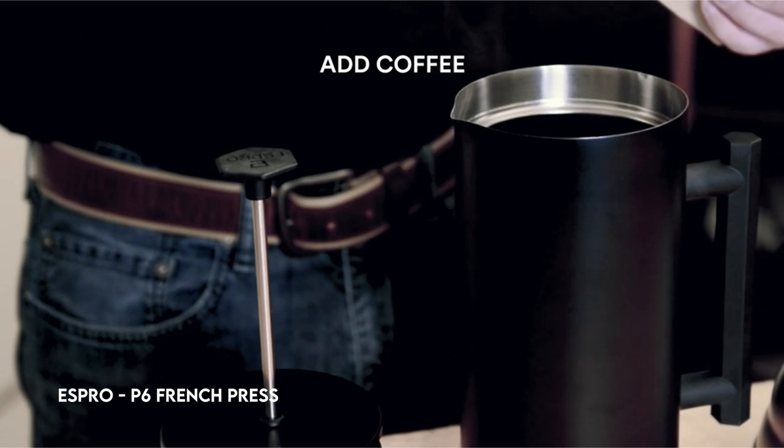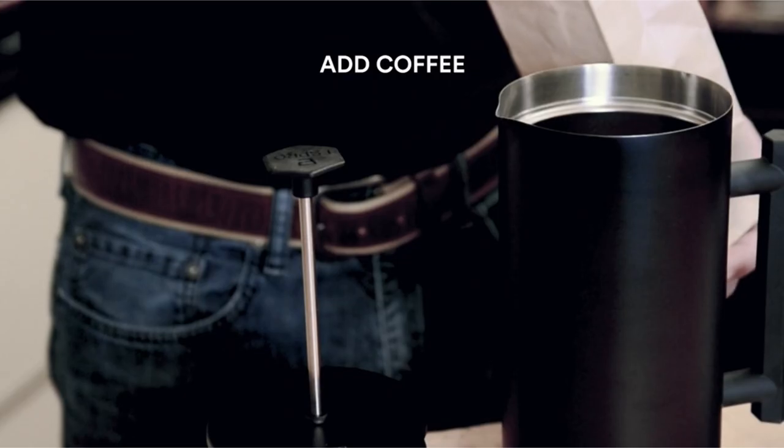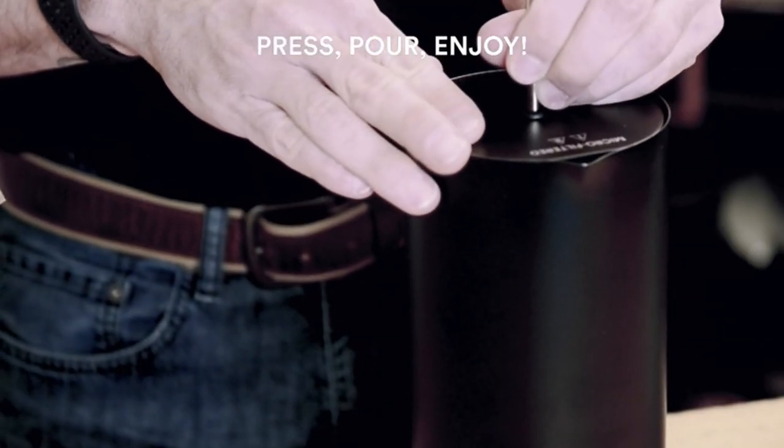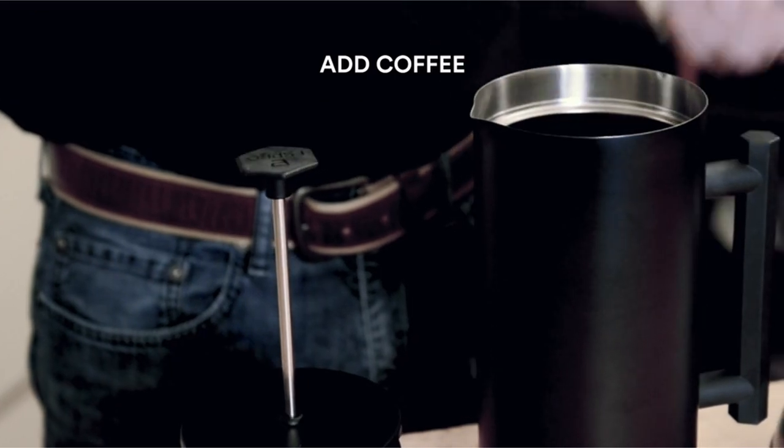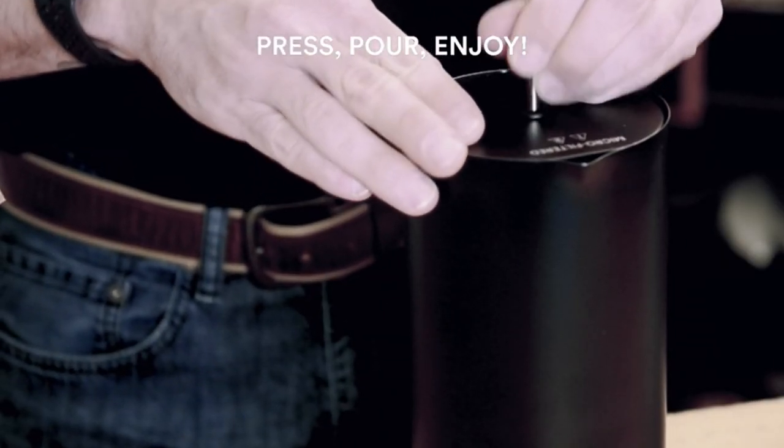On number 5, ESPRO P6 French Press. The ESPRO Press P6, created for explorers, will take your coffee experience to the next level. Whether you're camping, hiking, or simply enjoying the great outdoors, this press brews coffee that's up to the task.